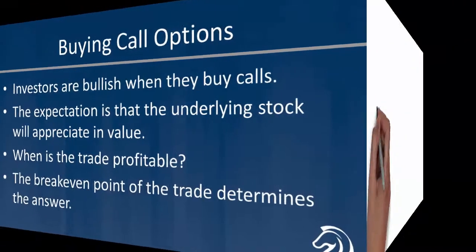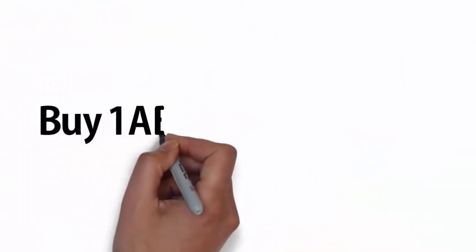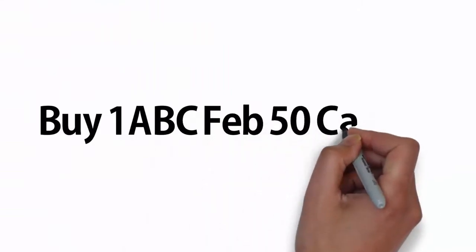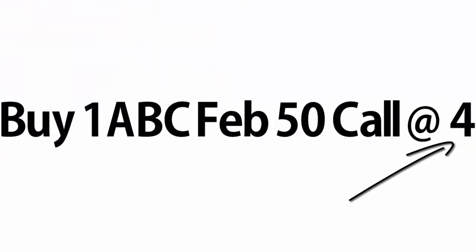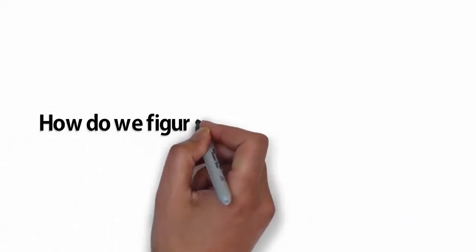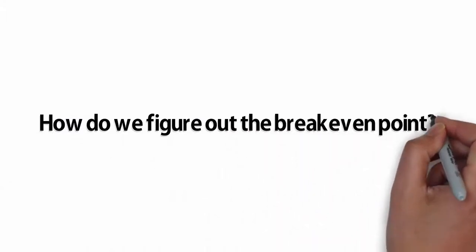So, take a look here. We buy one ABC March 50 call, and we pay a premium of $4 per share, or in other words, $400. Remember, call options are good for 100 shares. Now, how do we figure out the break-even point?